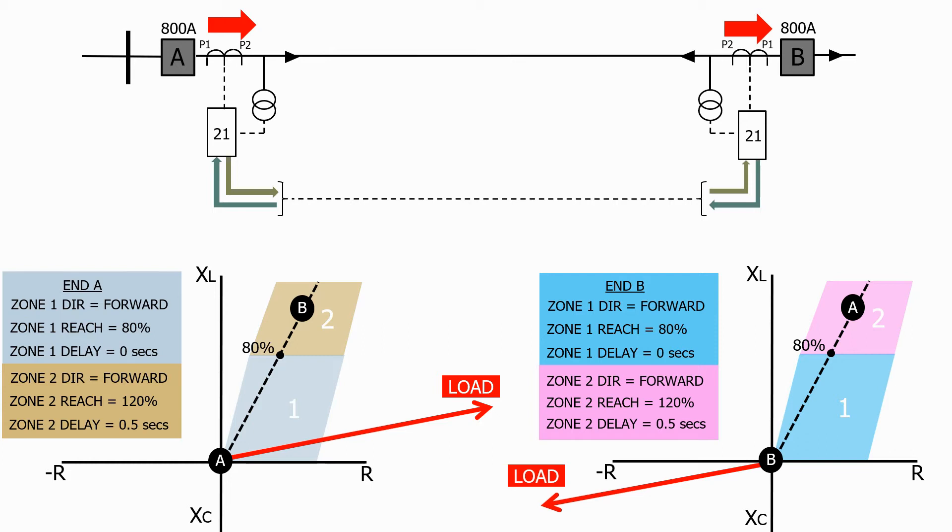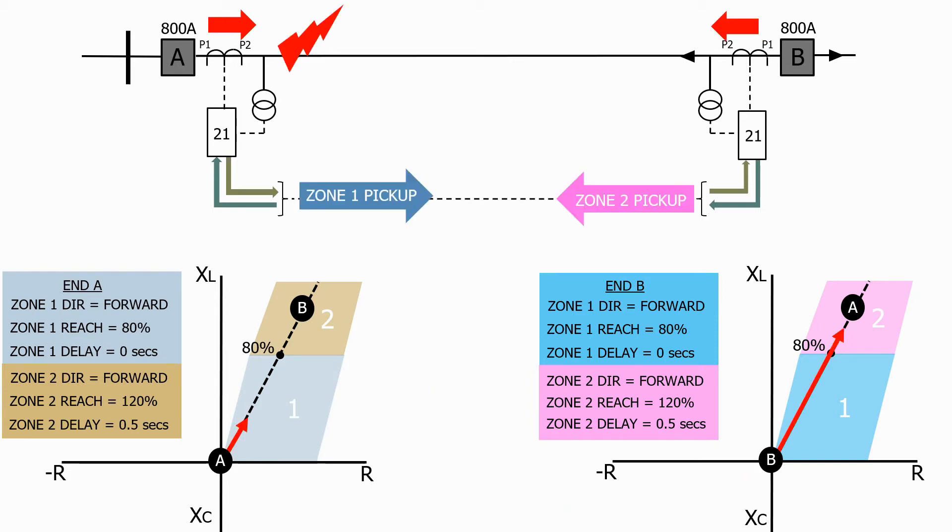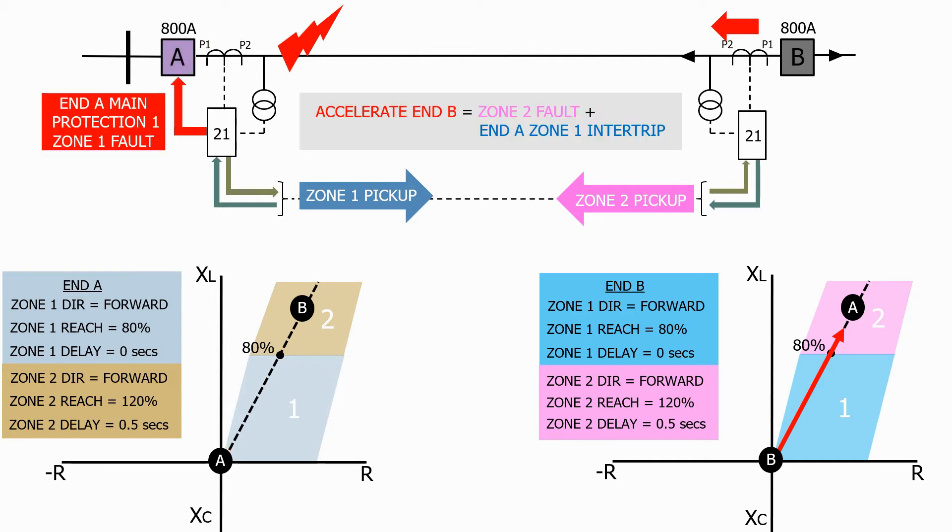Let's now add a fault in the first 10% of the feeder near to end A. On this occasion end A will see the fault in zone 1 and send the zone 1 pickup signal via the communication circuit to the other impedance relay. It also trips instantaneously on zone 1, clearing the fault from end A.